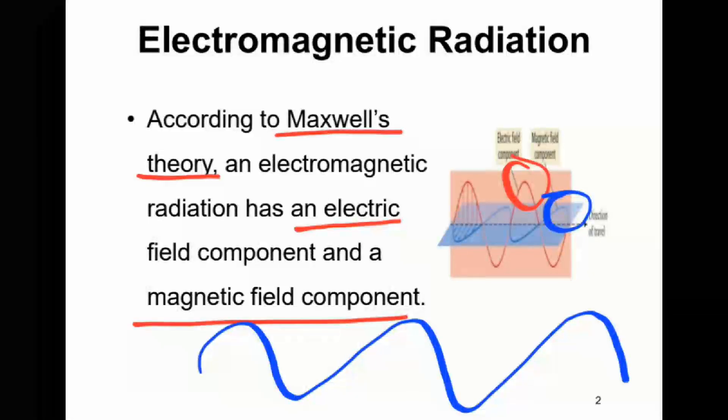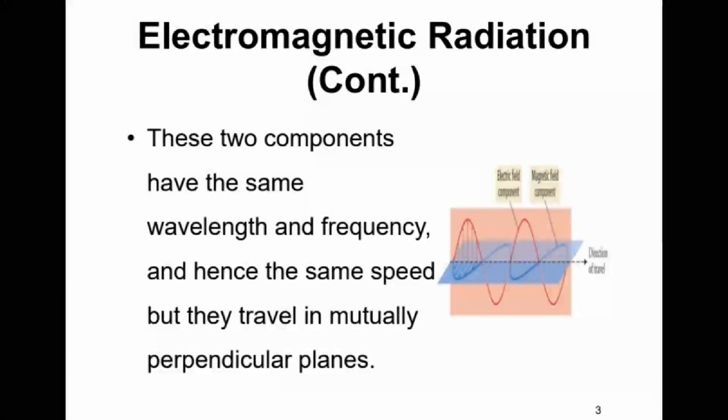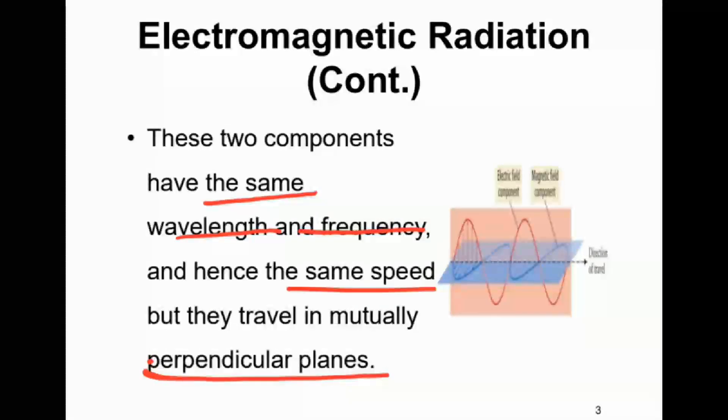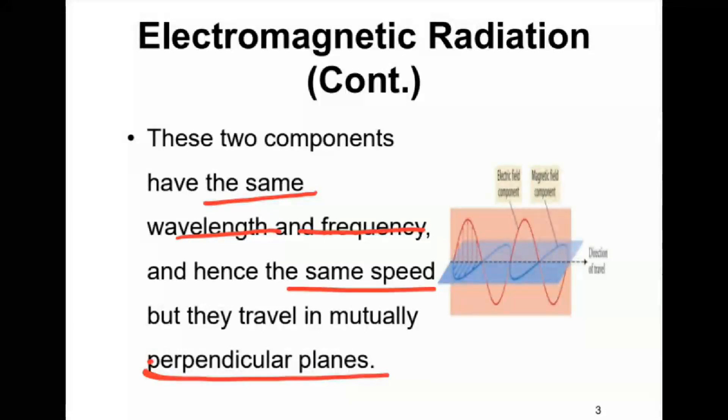These two components, these are the electric field and the magnetic field components of electromagnetic radiation, have the same wavelengths and frequency and hence the same speed, but they travel in mutually perpendicular planes.